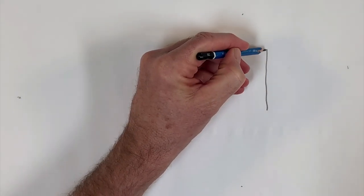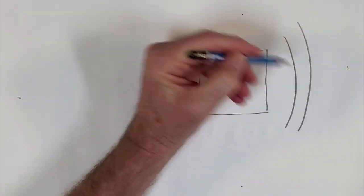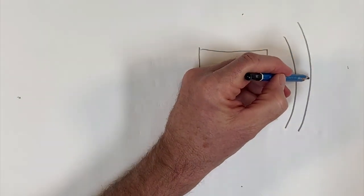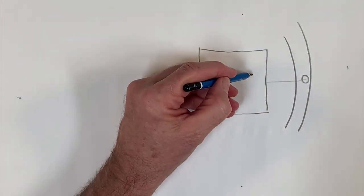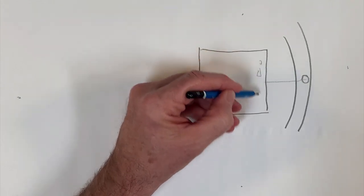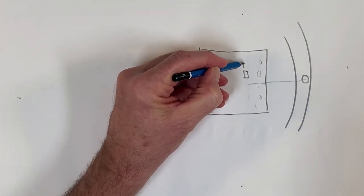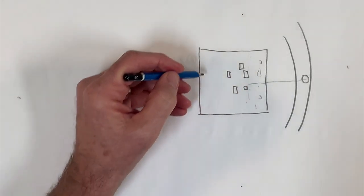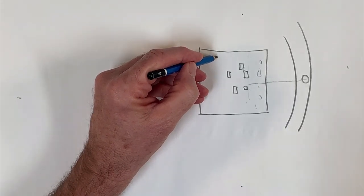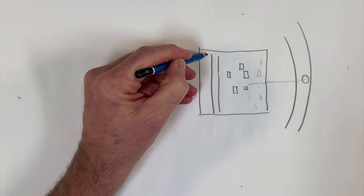I imagine foreground, middle ground, and background working something like this. Imagine this is a stage set, and here's the audience out here — you're the viewer. You've got the viewer out here looking at your painting, and you've got things not cluttered at the front of the stage. You want some room here for the actors to be doing the work they need to do — a table and a chair, whatever. And then there's the background.